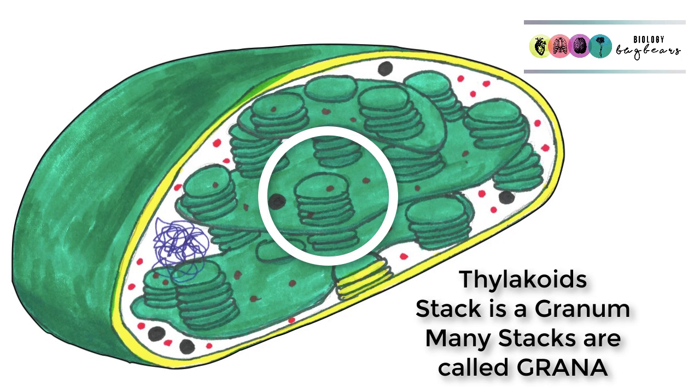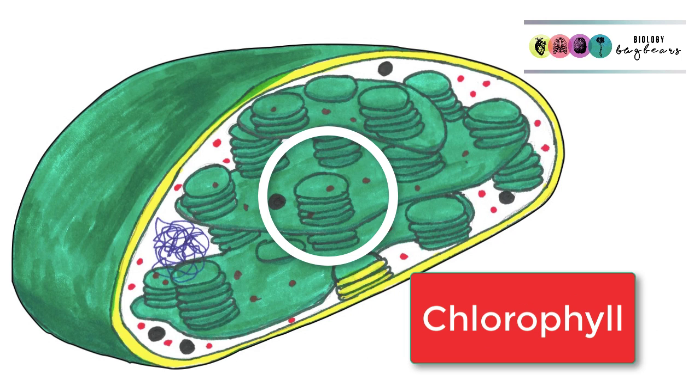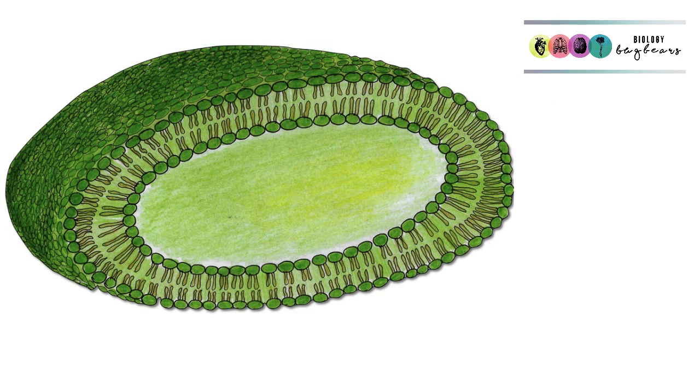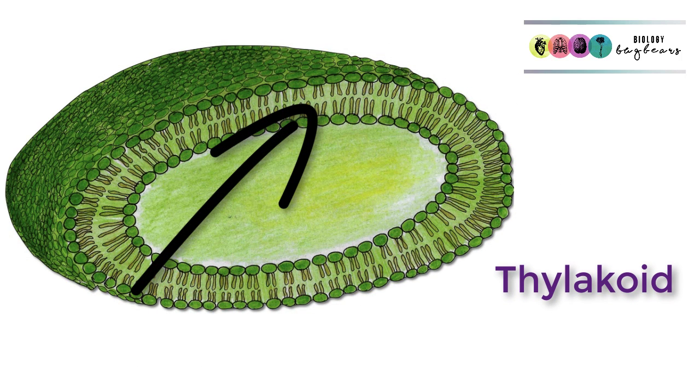It's inside these thylakoids or these grana that you find the chlorophyll pigment. Chlorophyll and all the other pigments are found in the membrane of the thylakoid. Remember that they're usually arranged into granum.